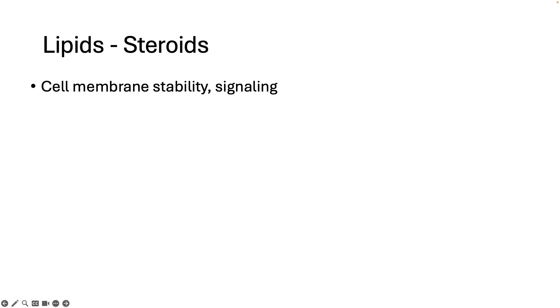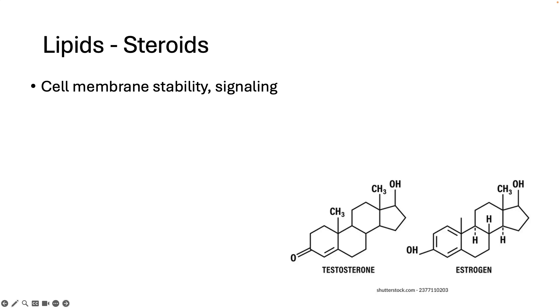The structure of steroid hormones, testosterone and estrogen, is shown here. These are not repeating subunits. Each molecule exists on its own. Although there is an oxygen with a hydrogen on the end, the majority of the molecule is made up of carbon atoms covalently bonded. So these steroids are nonpolar and hydrophobic.